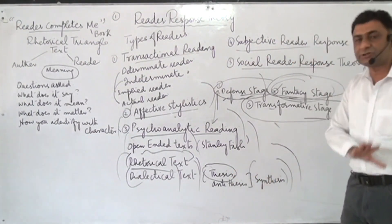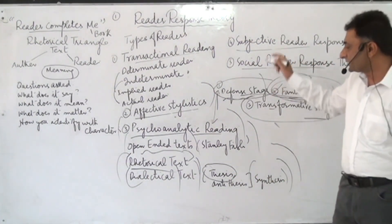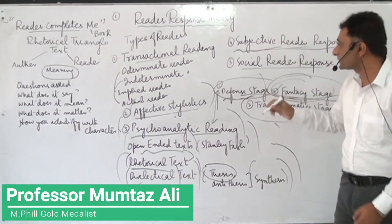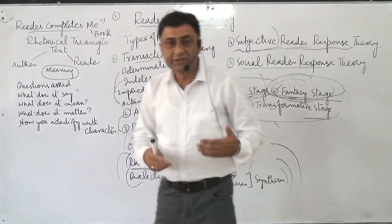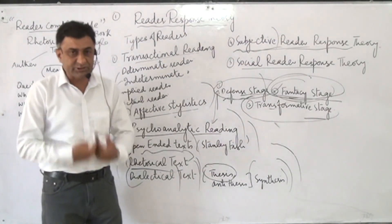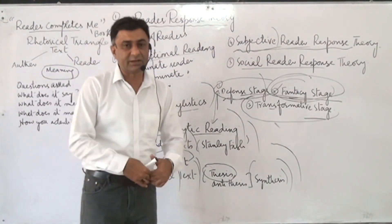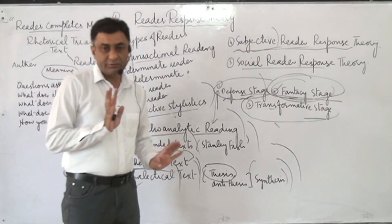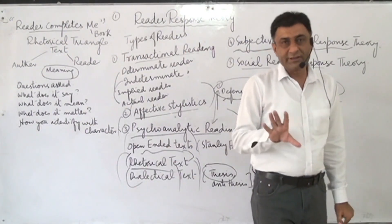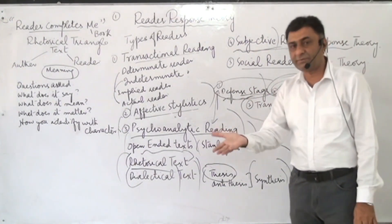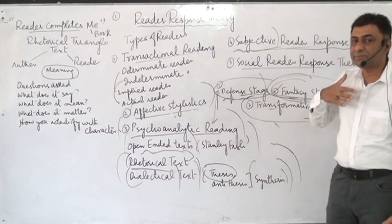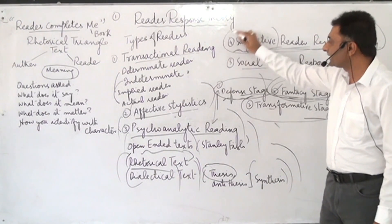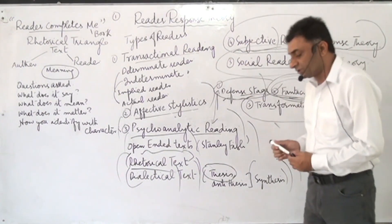Dialectical text means there are countless meanings of a piece of literature. The next type is subjective reader response theory — the very word 'subjective' says it all. It refers to the writer's personal approach: what the reader himself or herself thinks about that piece of literature. The reader's subjective feelings, emotions, and attitudes are what interpret the meanings of a text. This is called subjective reader response theory.